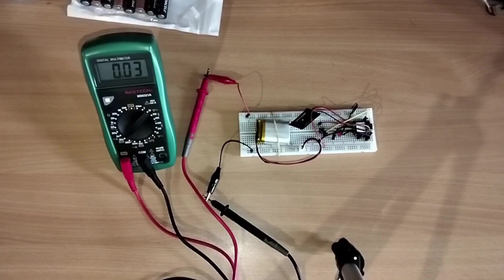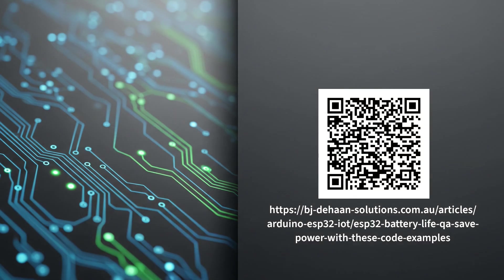I know we've covered a lot of code and concepts really quickly. If you want to go over all of this at your own pace with detailed explanations and all the code snippets ready to copy and paste you're in luck. I've written a massive companion article on my website that goes through every single one of these examples in detail. You can scan the QR code on your screen right now or just click the link at the top of the video description to check it out.